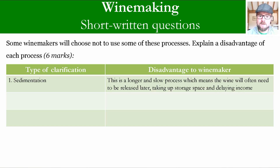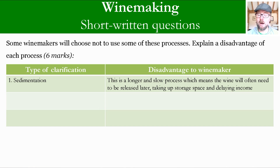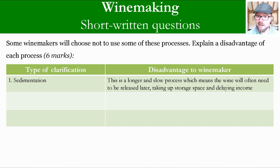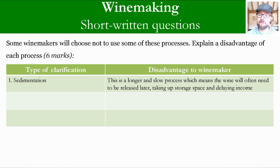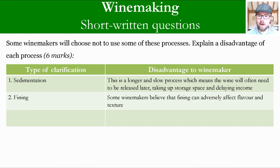The disadvantage of sedimentation is that it is a longer and slower process, which means the wine will often need to be released later, taking up storage space and delaying income. Most wine is made in the autumn and released in early spring, but if you want a really clear product naturally through sedimentation, it's going to take longer. You may be tying up vessels you need for blending, and you are delaying your release to market, which means delaying income.